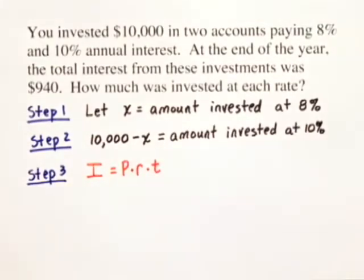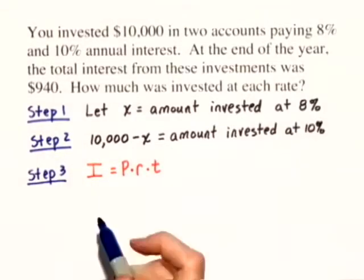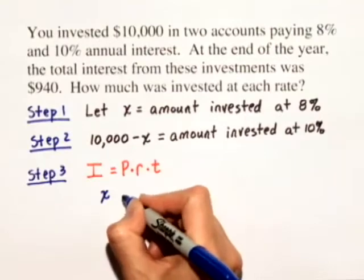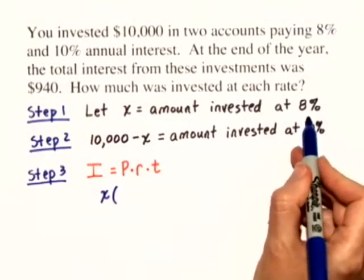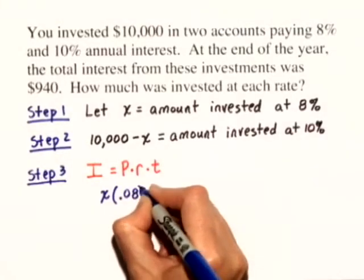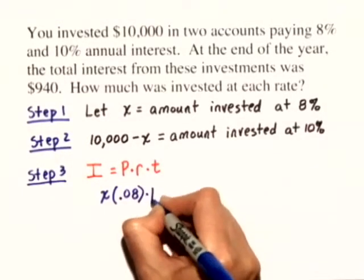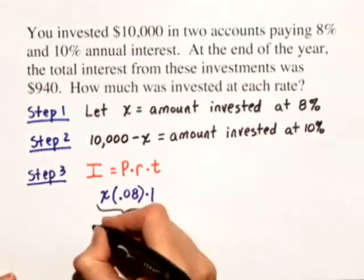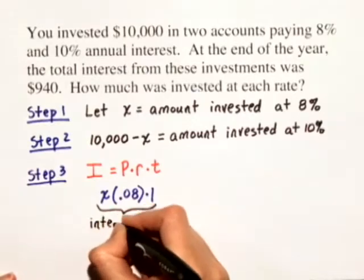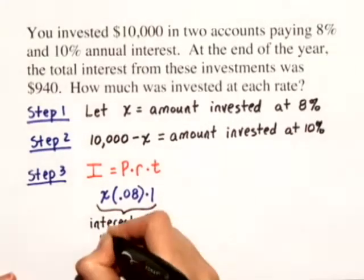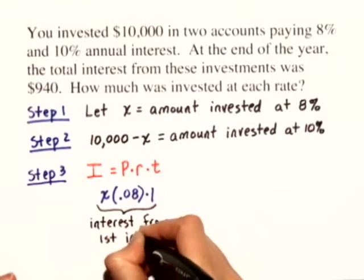So let's find, first of all, the principal invested in the first investment, that's X, times the rate, 8%, but we want to make sure we write it as a decimal, .08 times the time in the original problem we're told is one year. That amount that I've just written down really equals the interest from the first investment.